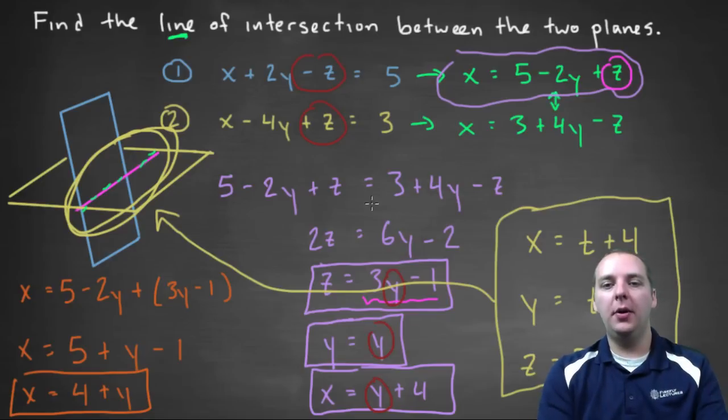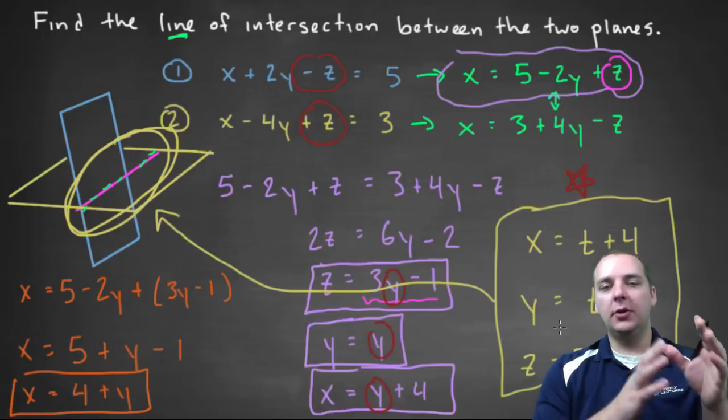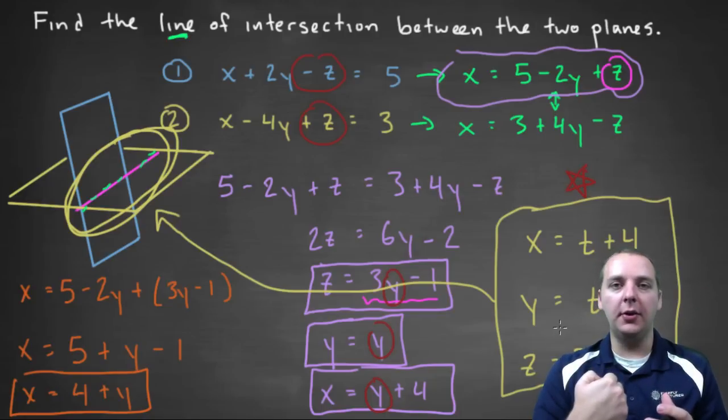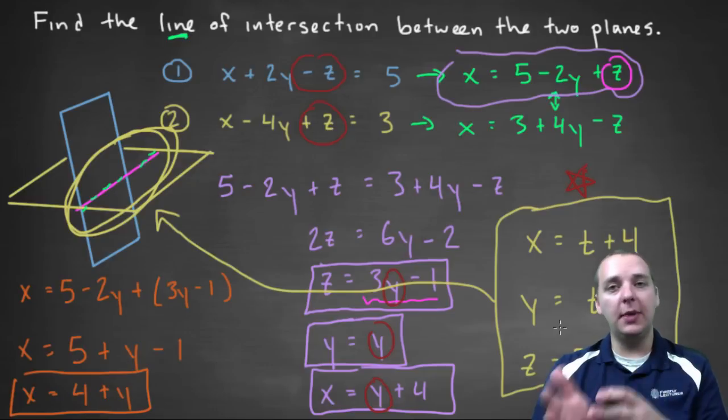If you'd rather it be in symmetric form, I'm not going to do this, but right here where you have your set of three parametric equations, solve all three of these guys for t. So you'd have like x minus four, etc. And so once they're all three set equal to t, then set all three of them equal to each other and remove the parameter t. Then you'll be in symmetric form instead of parametric form.